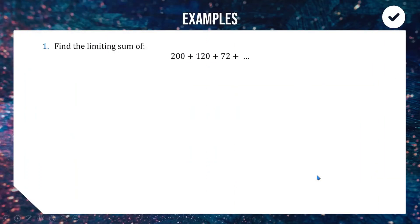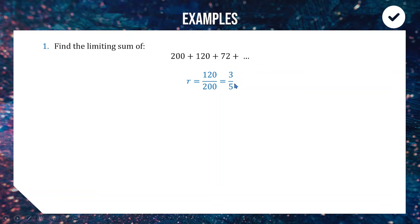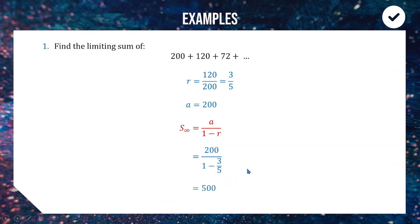Let's use this formula. We can see the terms are shrinking, so we need to find a and r. It may not be obvious what 200 is being multiplied by to get 120, so we work backwards: 120 ÷ 200 = 3/5. Since 3/5 is less than one the series is shrinking and has a limiting sum. With a = 200 and r = 3/5: S = 200 ÷ (1 − 3/5) = 500. This geometric series will never grow larger than 500.